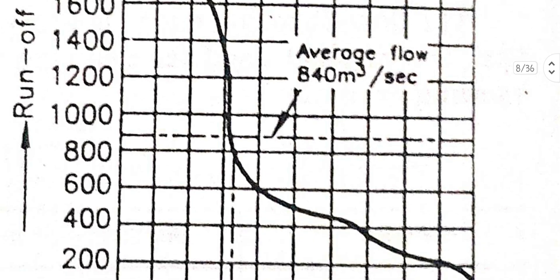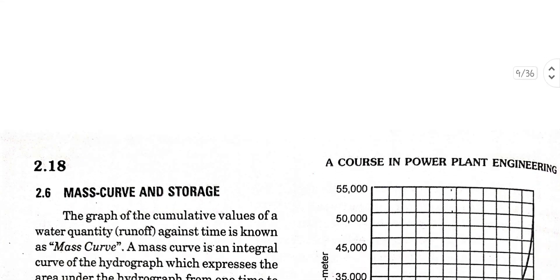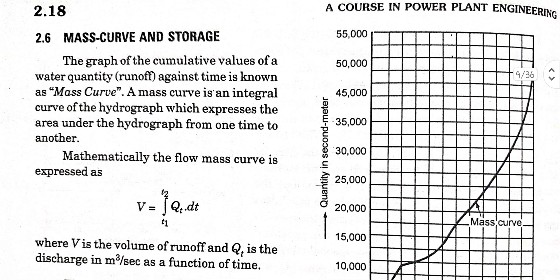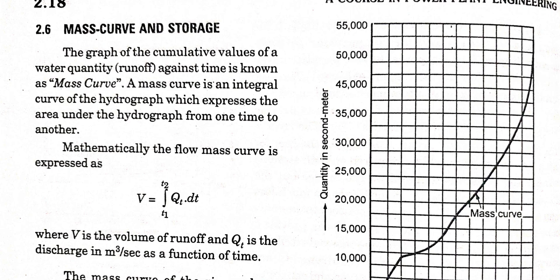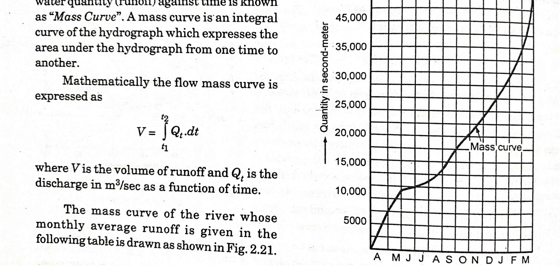Next topic is the mass curve. The graph of the cumulative values of water quantity or runoff against time is known as a mass curve. A mass curve is an integral curve of the hydrograph which expresses the area under the hydrograph from one time to another. Mathematically it can be expressed as: V = ∫(t1 to t2) Q(t) dt, where V is the volume of runoff and Q(t) is the discharge in cubic meters per second as a function of time.